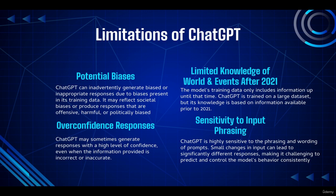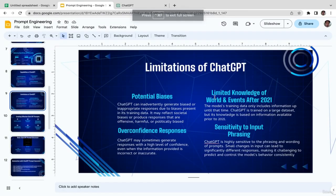When it comes to potential biases, there's not much we can do. The larger the dataset, the better ChatGPT performs — but at the same time, the larger the dataset, the more bias it can potentially carry. That's just a consequence we all need to accept. The second limitation is limited knowledge of world events after September 2021 — the model's training data only includes information up until that time.